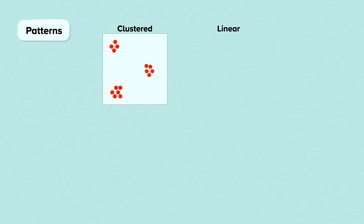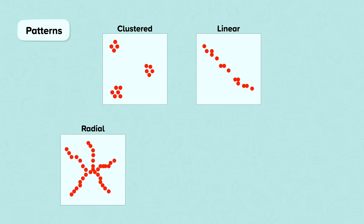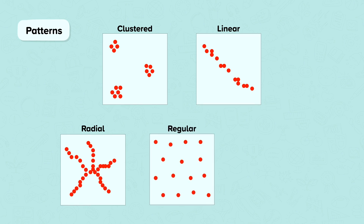Linear, when features are spread out in lines, for example earthquakes. Radial, when features are spread out from a central point, such as roads. Regular or even, when features are spread out evenly across the map. And if there is no clear pattern, use the term random.